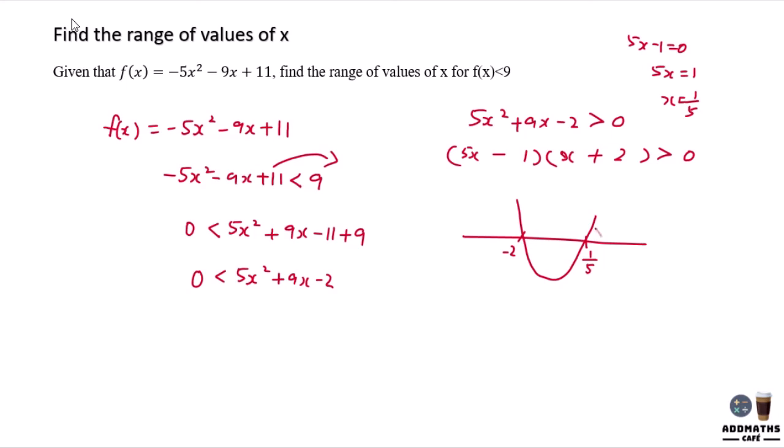All right, so more than 0 means it's on this side. So your x will be less than negative 2. x will be more than 1 over 5. There will be two answers, two range answers for this.